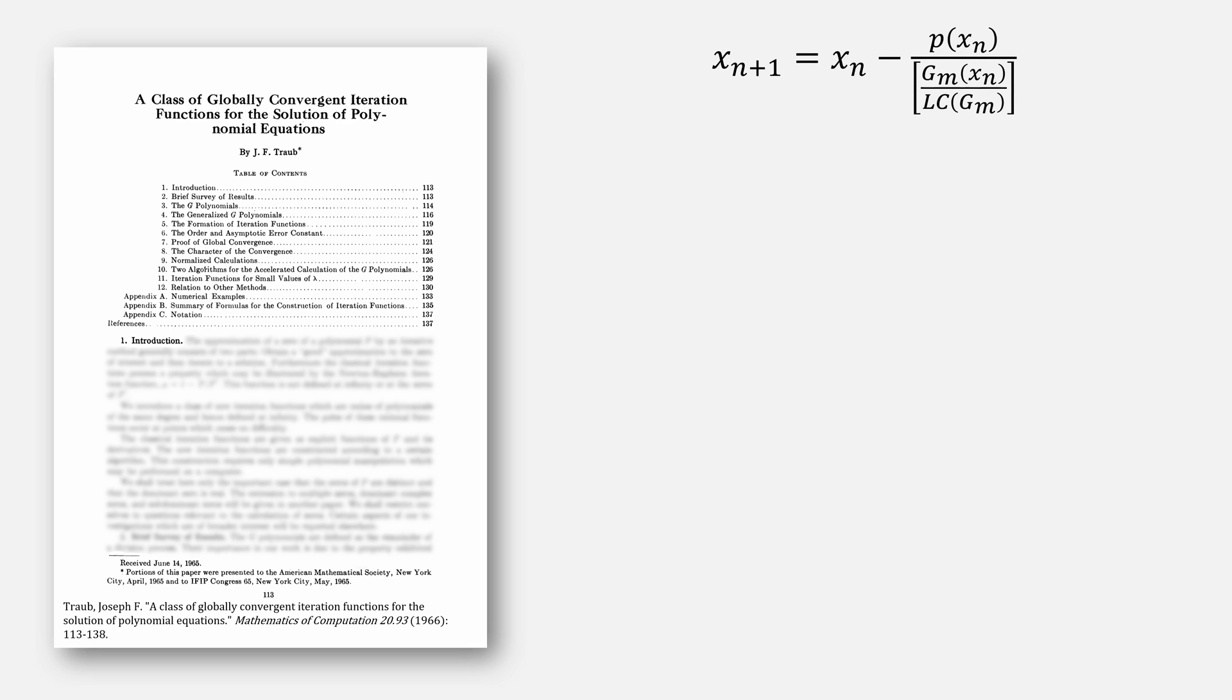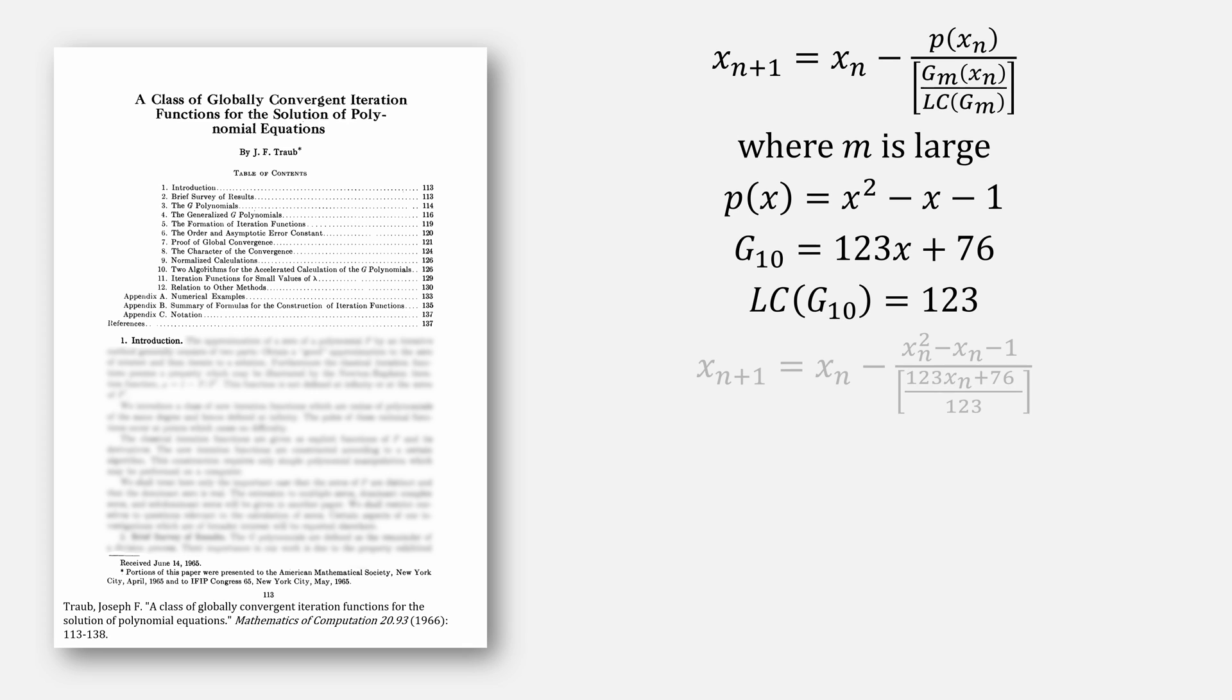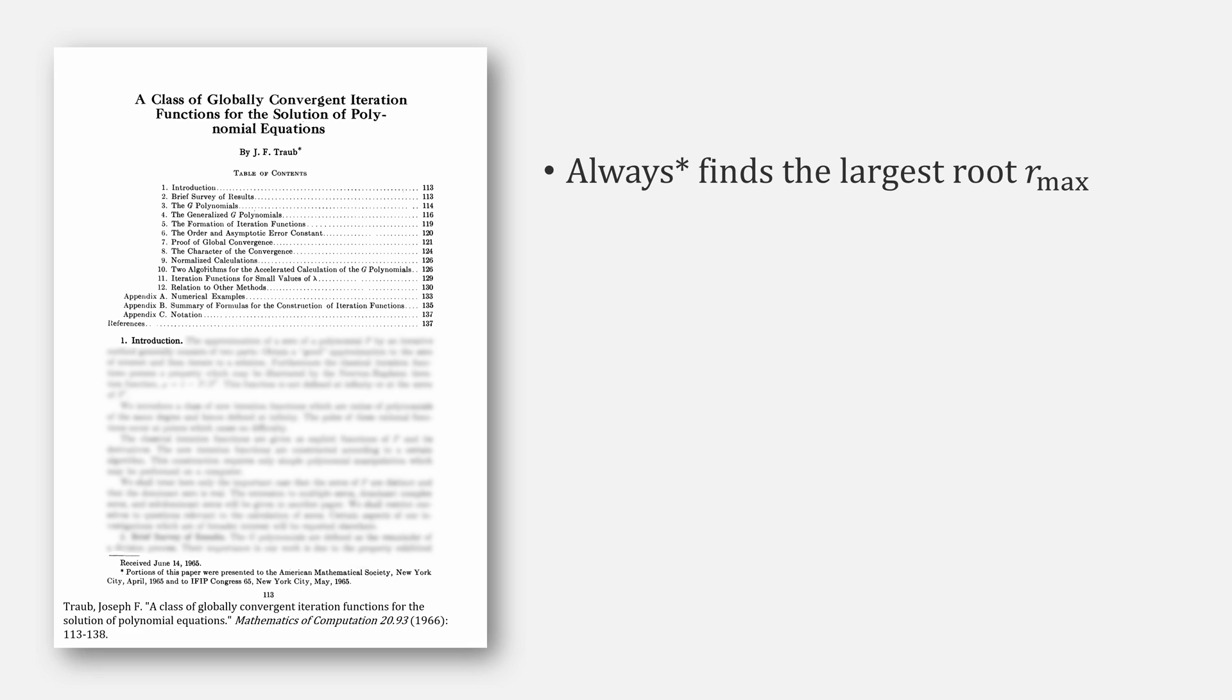Then, if we take our updated version of Newton's method, dividing instead of by the derivative, but rather g divided by its leading coefficient, where m is some sufficiently large number, let's just say 10. Given our polynomial x squared minus x minus 1, stopping at g sub 10 of 123x plus 76, its leading coefficient is 123, we get this form. Let's just pick a value for x0, and let it be 0. Our next value for x is going to be 1.61842. Repeat the process, and our next value for x converges at 1.618.